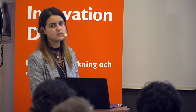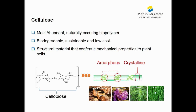Before going to the cellulose nanocrystals, I will start with cellulose. Cellulose is known as the most abundant naturally occurring biopolymer. It's a polysaccharide containing anhydroglucose units. This biodegradable and sustainable low-cost material is structural and confers its mechanical properties to plant cells.